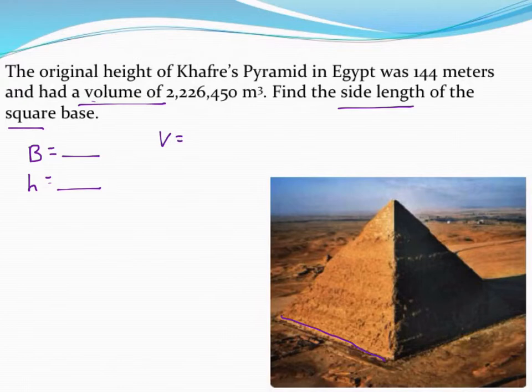Recall, the formula to find the volume of a pyramid or a cone is area of the base times the height and then divided by 3. So let's figure out this information that I need.